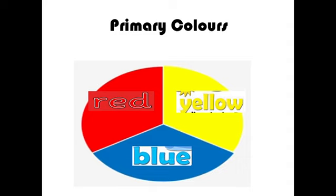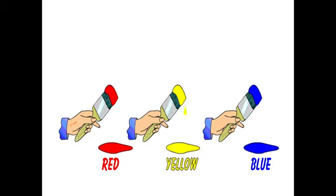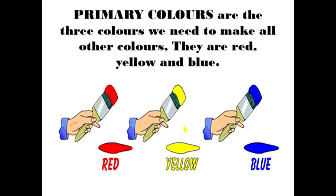So these are primary colors. Primary colors are the three colors we need to make all other colors. They are red, yellow, and blue.